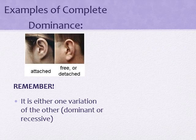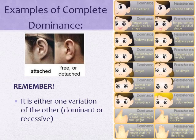So some examples of complete dominance — here you either have one variation or the other. In this case, you either have attached earlobes or detached earlobes. Here are some other examples, such as being able to coil your tongue, a widow's peak, double folded or single folded eyelids, dimples, or the normal amount of hair.